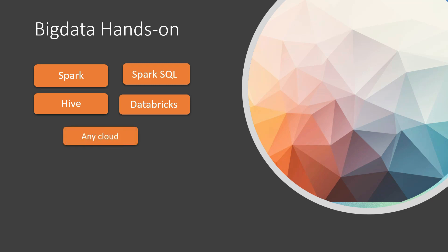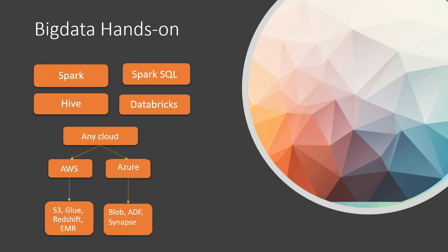Experience on any one cloud platform — GCP, Azure, or Amazon — will really help with hands-on pipeline building and analytics. On AWS, you don't need to know all services, but some like Glue, Redshift, EMR, and S3 are important if you've used them practically. On Azure, you should know about Blob storage, ADF or Synapse, and security services like Key Vault or Active Directory. You should have touched at least some of these and done hands-on work.